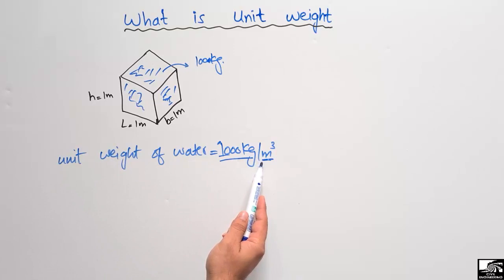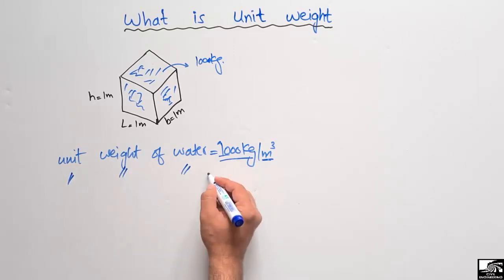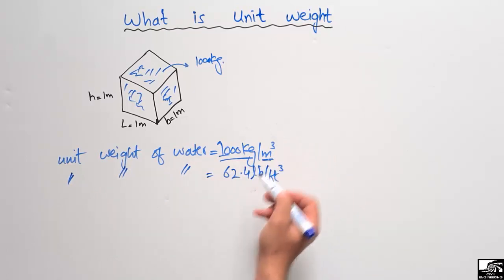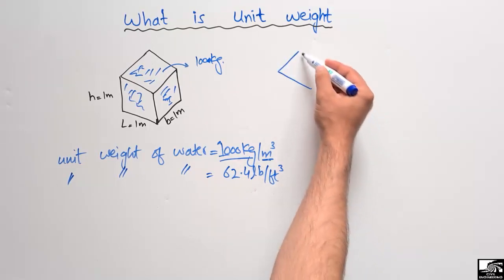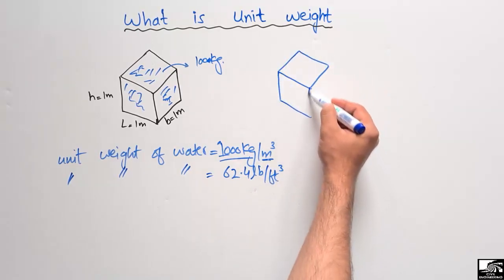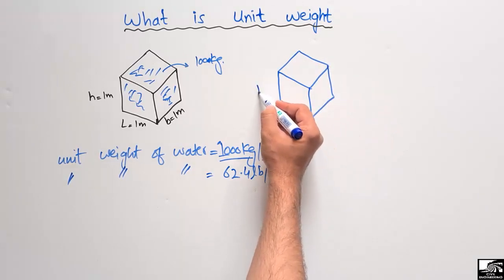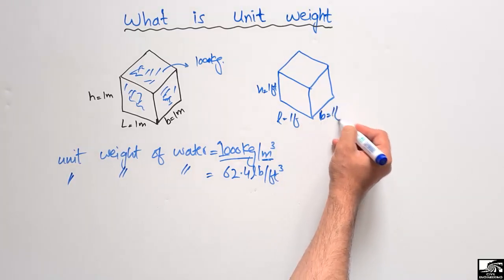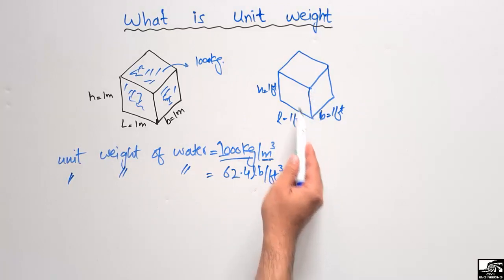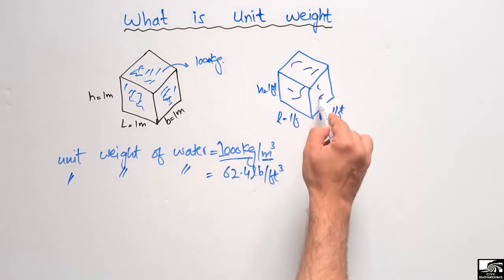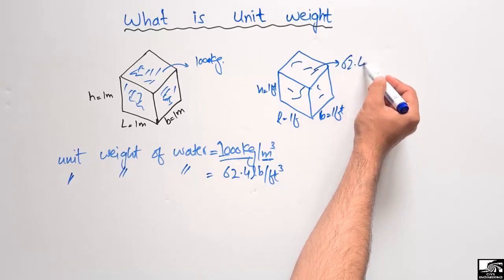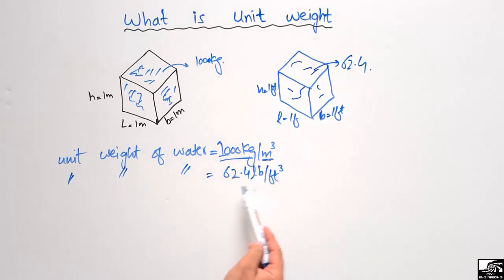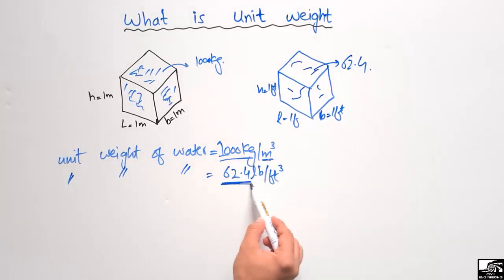Similarly, the unit weight of water is equal to 62.4 pound per cubic foot. If we consider a cube with a height of 1 foot, length of 1 foot, and width of 1 foot, then 62.4 pounds of water can fit in this cube.